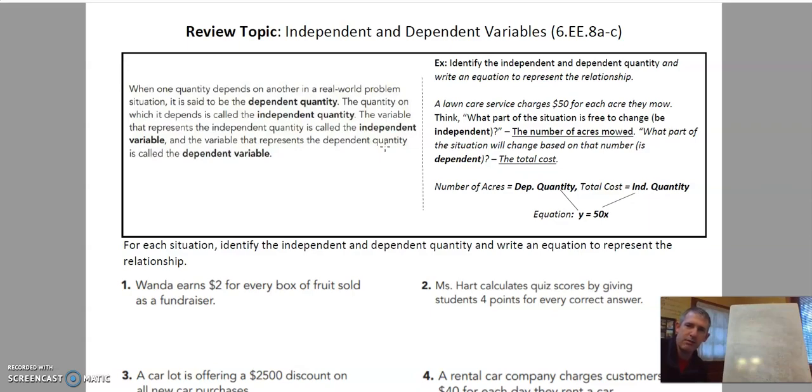Let's look at this example. Identify the independent and the dependent quantity and write an equation to represent the relationship. A lawn care service charges $50 for each acre they mow. So you think, what part of the situation is free to change or to be independent? I also think of this as the cause and effect, the if-then. So what's causing the change, right?